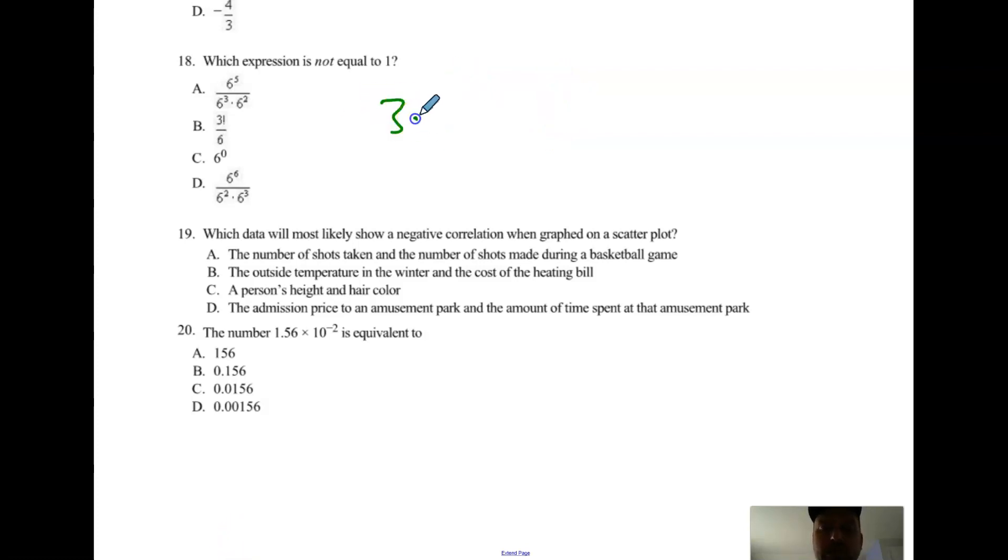Three factorial just means 3 times 2 times 1 in this case over 6. Like 7 factorial is 7 times 6 times 5 times 4 times 3 times 2 times 1. Anyway, this is 6 over 6, which is also equal to 1. This is equal to 1 because anything raised to a zero is 1. So by elimination, you end up with A: 6 to the 6 over 6 to the 5. When you divide, the bases are the same, subtract your exponents, you get 6 to the 1 or just 6. So you should have had choice D for number 18.